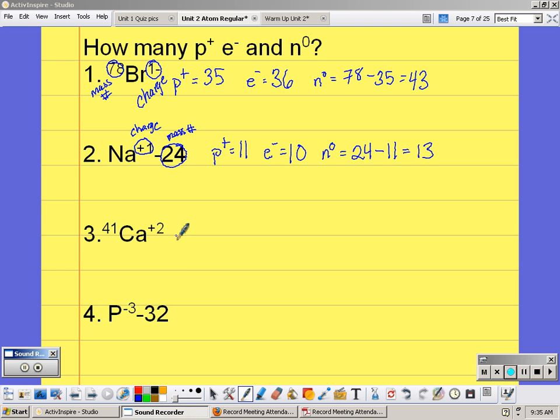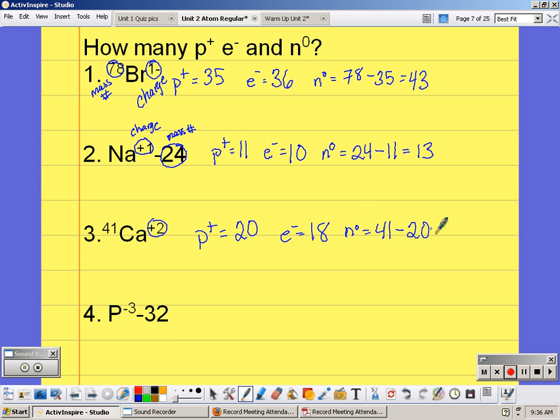So if we look at the next one, we have calcium. And on the periodic table, calcium is number 20. It's a plus 2 charge, which means I have to have 2 more protons than our electrons, so that would be 18. And then for neutrons, we would say 41 minus 20 gives us 21 neutrons.